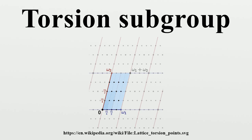If A is finitely generated and abelian, then it can be written as the direct sum of its torsion subgroup T and a torsion-free subgroup. In any decomposition of A as a direct sum of a torsion subgroup S and a torsion-free subgroup, S must equal T. This is a key step in the classification of finitely generated abelian groups.